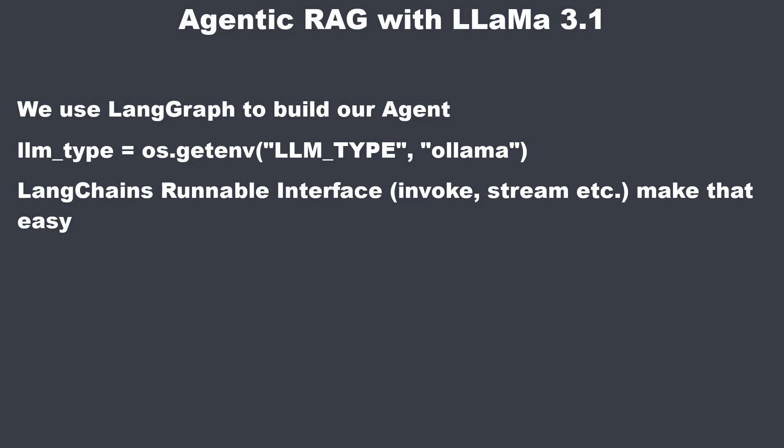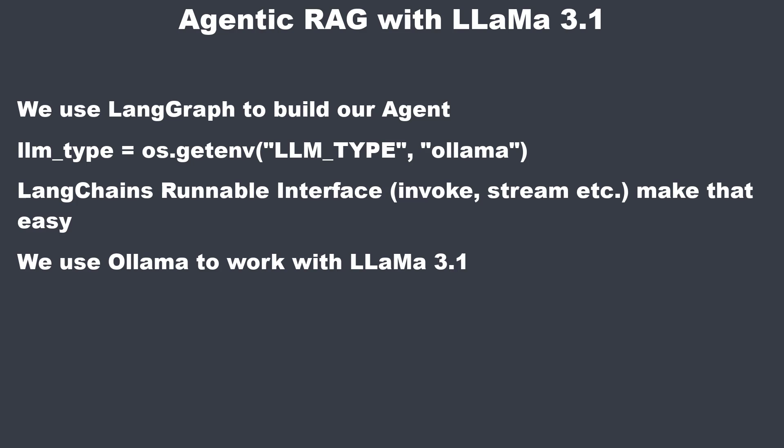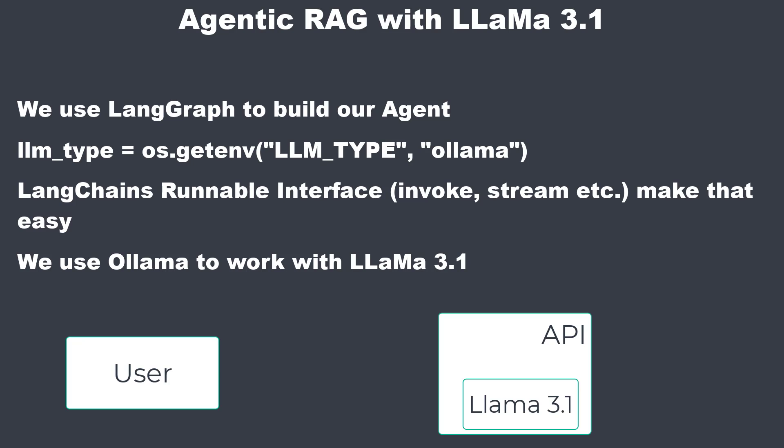We will use Llama 3.1 in combination with Ollama, which makes it very easy to use open source models via an API. Ollama will start a server which runs on port 11434 and provides a standardized interface we can use to communicate with those open source models.